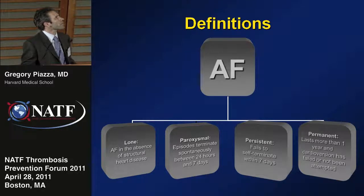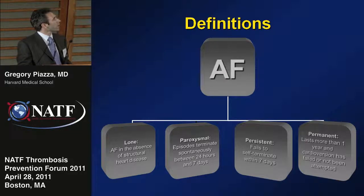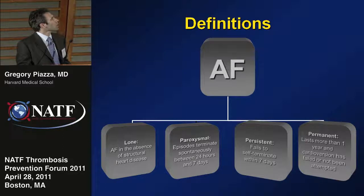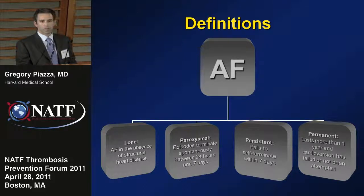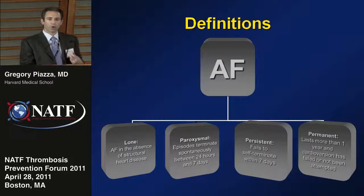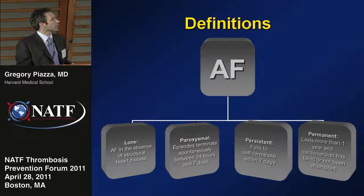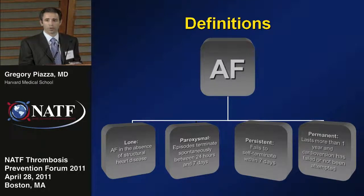I'd like to review some definitions. Lone atrial fibrillation is used to describe atrial fibrillation in the absence of structural heart disease. Paroxysmal atrial fibrillation is when episodes terminate spontaneously between 24 hours and 7 days. Persistent atrial fibrillation fails to self-terminate within 7 days. And finally, permanent atrial fibrillation lasts more than a year, and a cardioversion attempt has either failed or not been made.